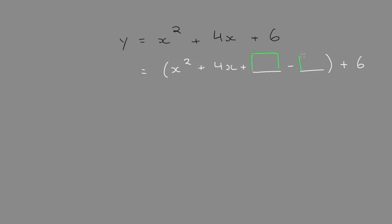We'll find these numbers with a formula. It's just b over 2, squared. So what's b? 4. So 4 over 2 is 2. 2 squared is 4. So that's all that it is.